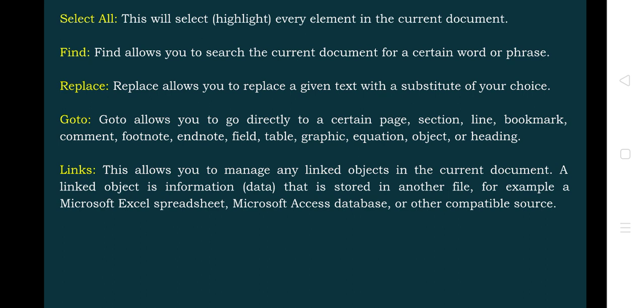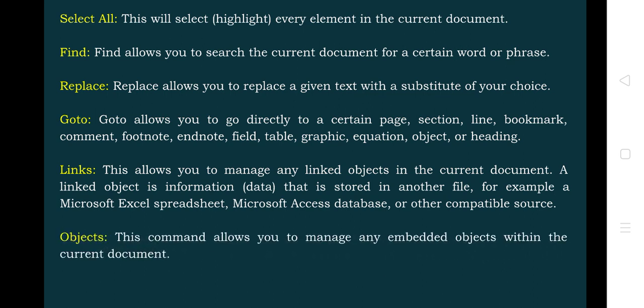Next is Links. This allows you to manage any links to objects in the current document. A link to an object is information stored in another file — for example, a Microsoft Excel spreadsheet, Microsoft Access database, or any other compatible source. You can connect two different files using the link-to-object concept. Finally, the Objects command allows you to manage any embedded objects within the current document — you can resize the object, remove it, or scale it down, whatever you need to do with it.